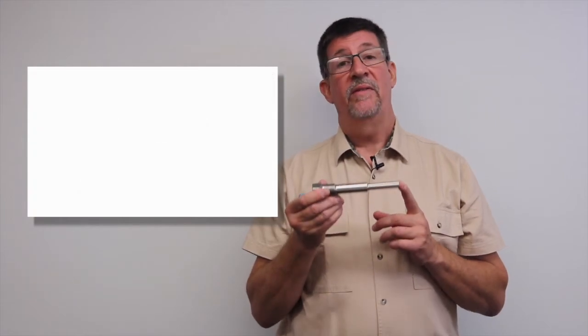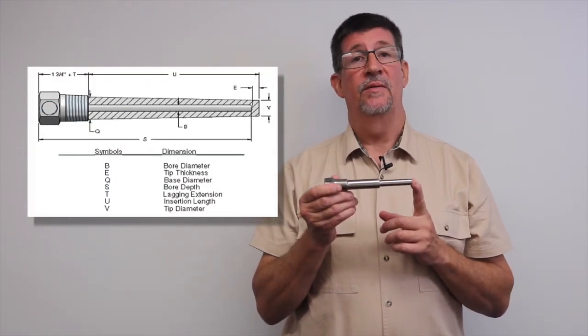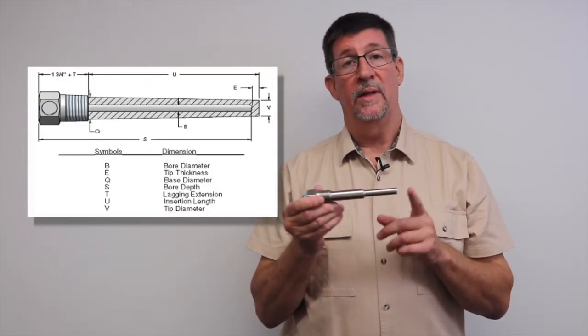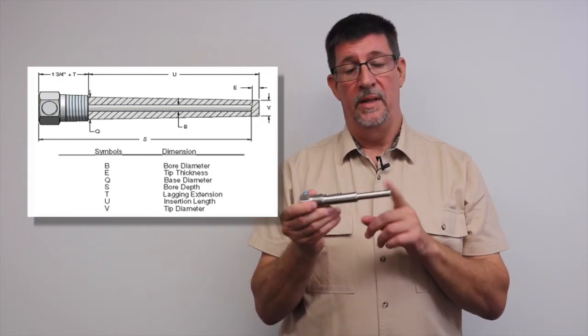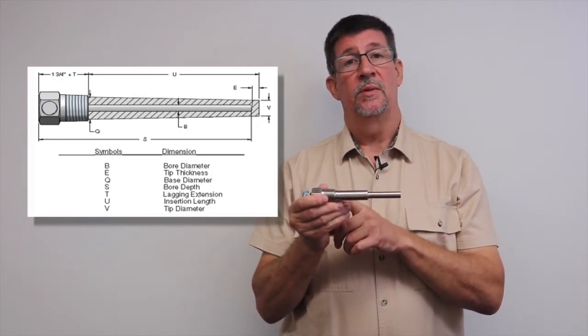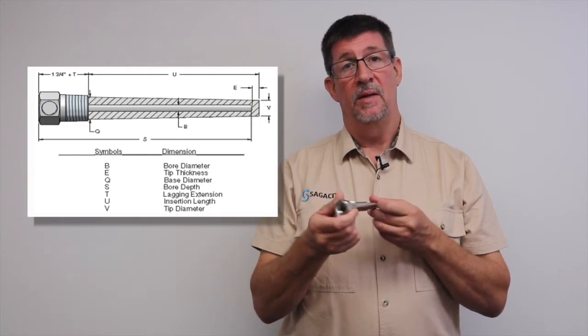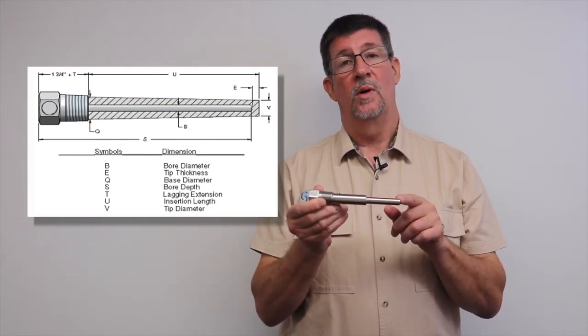Why is this important? Well, you have to match the temperature measuring device U-length with the U-length of the well. What you don't want is a lot of air in between the temperature measuring device in the inside bore and the tip of the Thermo-Well.